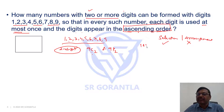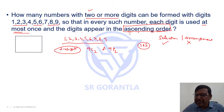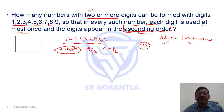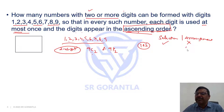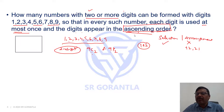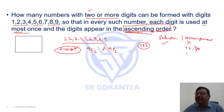If the ascending order condition were not there, the possible numbers with 1 and 2 would be 12 and 21. But since the question says digits must be in ascending order, it cannot be 21 — it is only 12. There is only one possibility for any selection of digits.